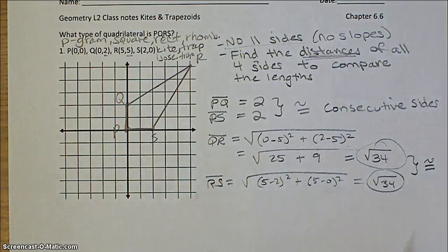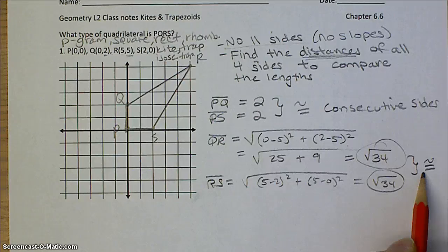So once you finish your distance formula, you should also get the square root of 34, which proves that these pairs of consecutive sides are also congruent.